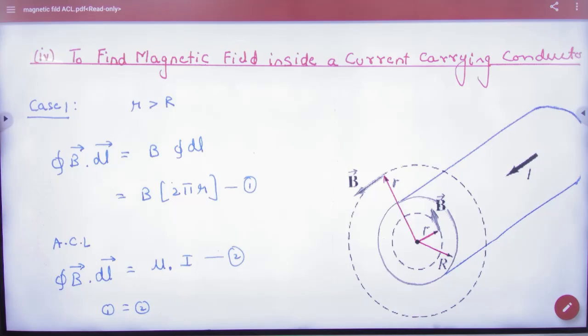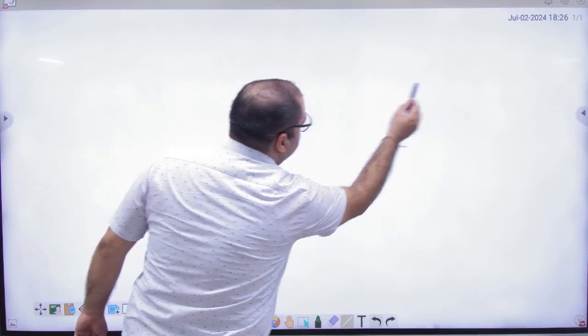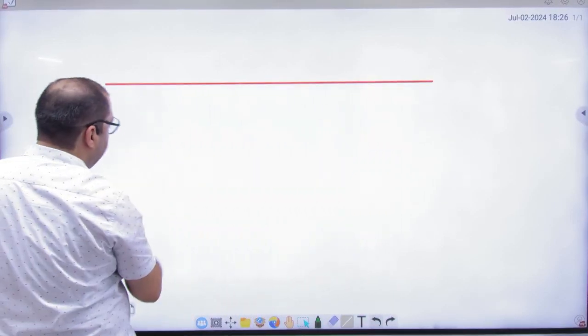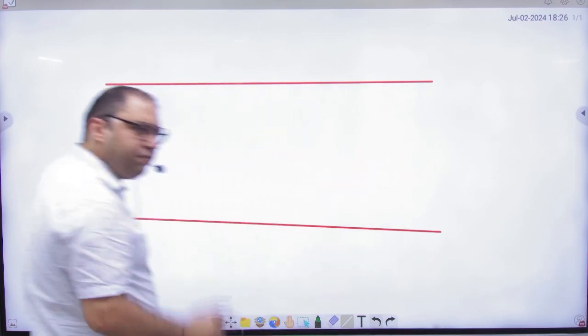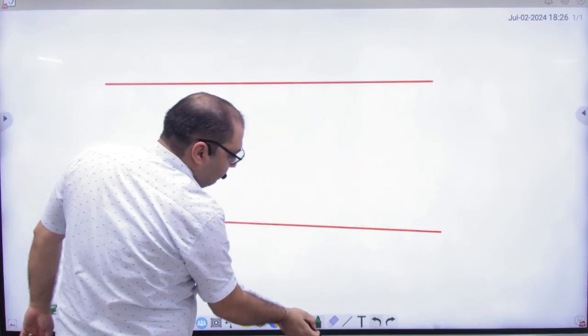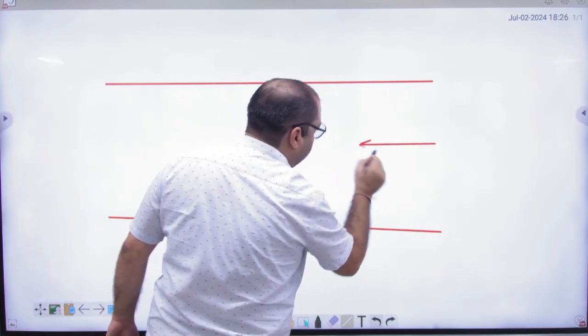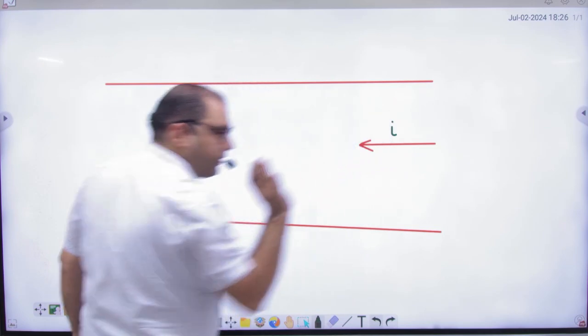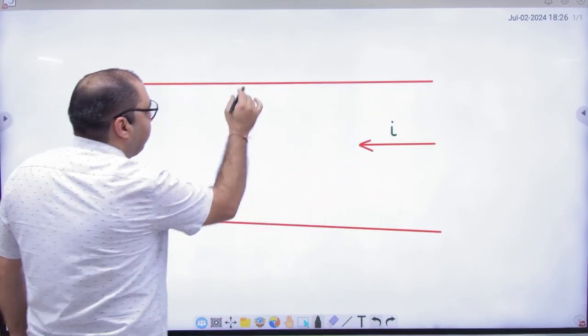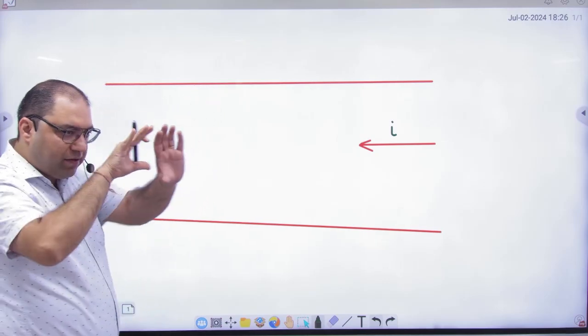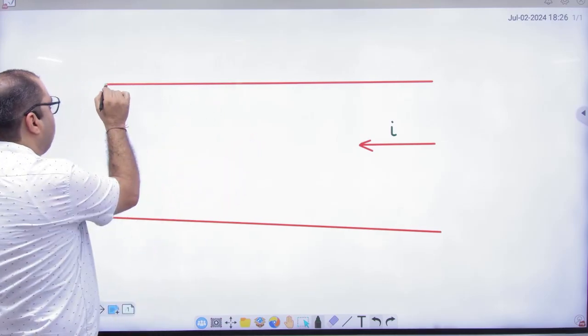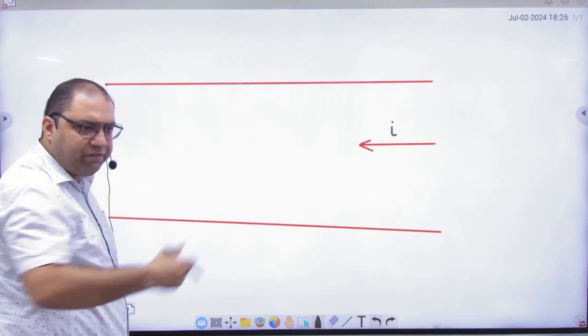So magnetic field is inside a current carrying conductor. Since we have taken thin wires, now we will take thick wire. Suppose you have an infinite wire, and this infinite wire is carrying current I. This is clear inside. When you see this wire from the side, obviously it is circular. It is an infinite wire.